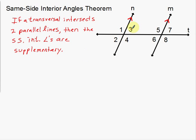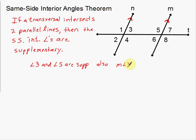Which means angle 3 and angle 5 are going to add up to 180 degrees. They're not going to be congruent — just look at them, they can't be congruent. 3 is small, 5 is big. So it has to be something else. In this case, the same side interior angles theorem tells us that same side interior angles are supplementary. This is the only one that's different from the rest of them. So that means angle 3 and angle 5 are supplementary, which means the measure of angle 3 plus the measure of angle 5 equals 180 degrees. You could also write it that way.